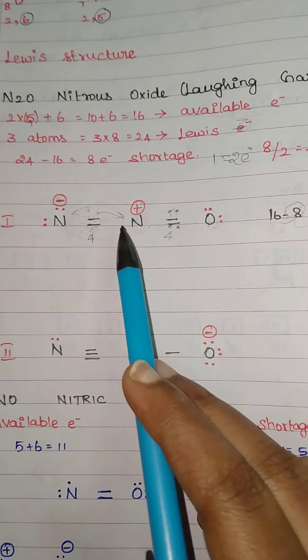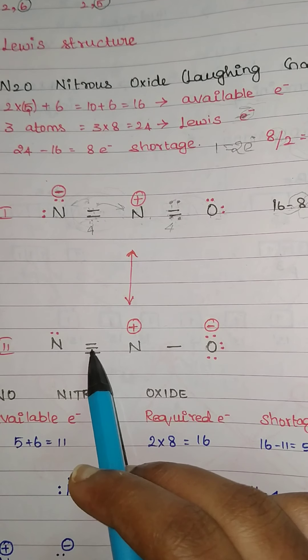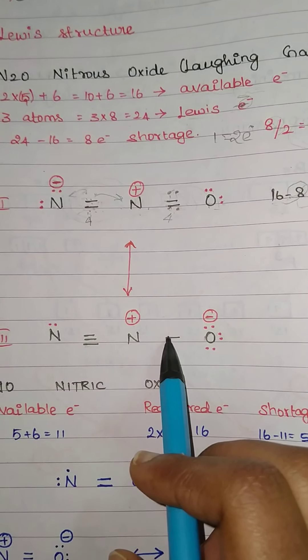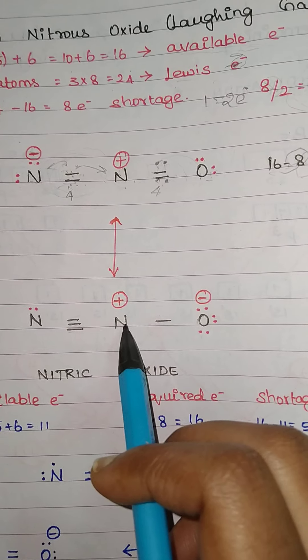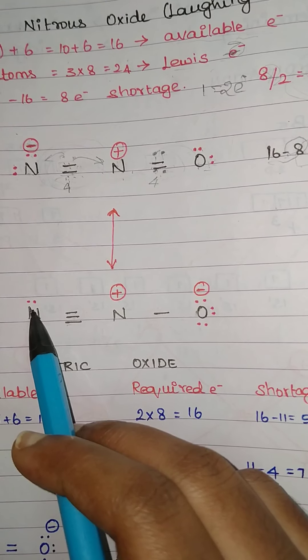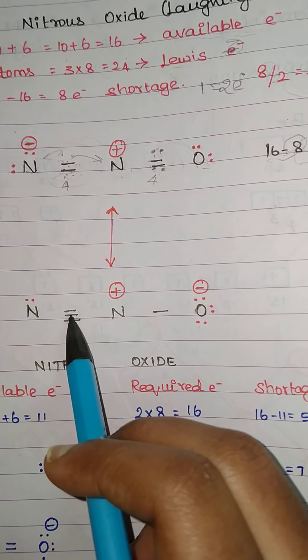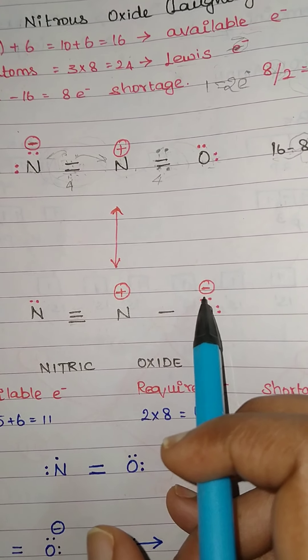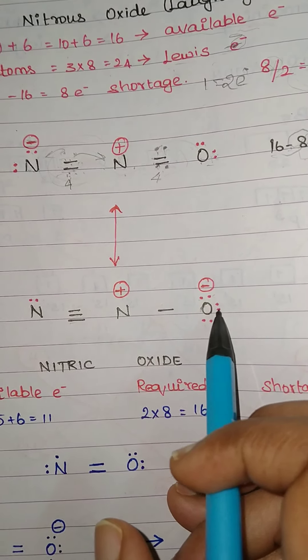Another possible structure uses a different bond arrangement — for example, 3 bonds and 4 bonds on alternate sides. For the remaining 8 electrons, oxygen being highly electronegative gets filled first. Counting the electrons on oxygen: 1, 2, 3, 4, 5, 6, 7, 8 — that gives oxygen an excess, so it gets a negative charge. For this nitrogen: counting gives 1, 2, 3, 4 assigned electrons versus 5 valence, so it gets a positive charge. So this is the second possible resonance structure of N2O.